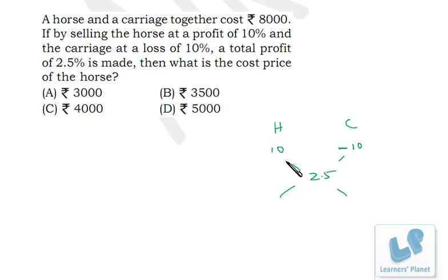So 10 minus 2.5, it will be 7.5. While we use allegation method, this data is smaller than this, so we'll find the difference of 2.5 and minus 10. So 2.5 minus minus 10, that's 12.5. So the ratio of their cost is 5 is to 3.